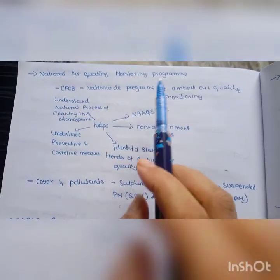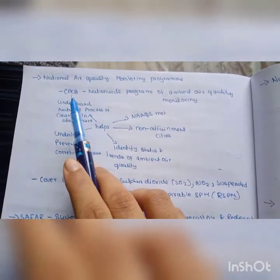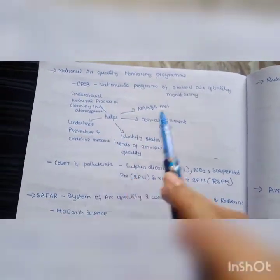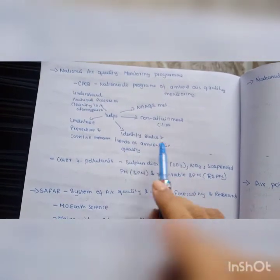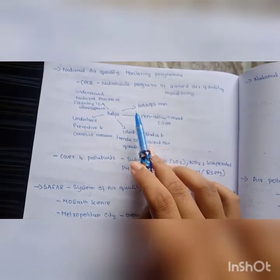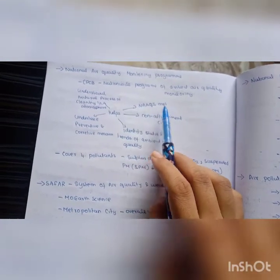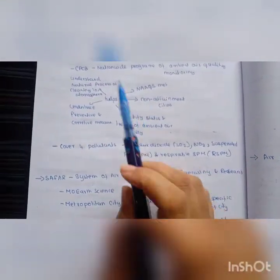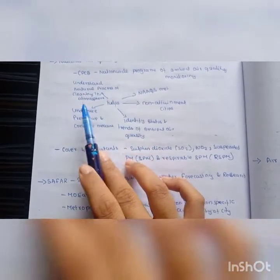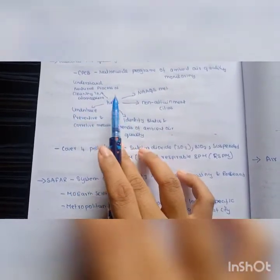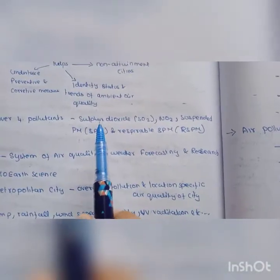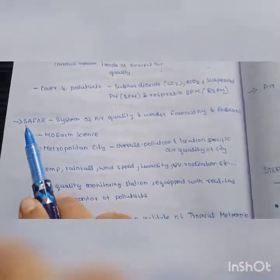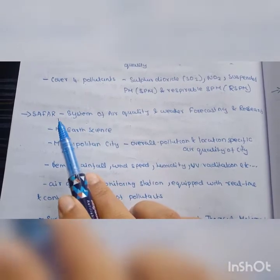National Air Quality Monitoring Program by the Central Pollution Control Board. This is a nation-wide program to help non-attained cities identify status of ambient air quality. Then, cities can meet the National Ambient Air Quality Standards and establish prevention and corrective measures. Understand the natural process of cleaning of atmosphere. Four pollutants monitored: sulfur dioxide, nitrogen dioxide, suspended particles, and suspended particulate matter.